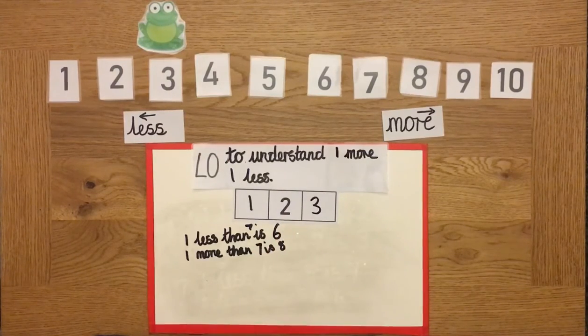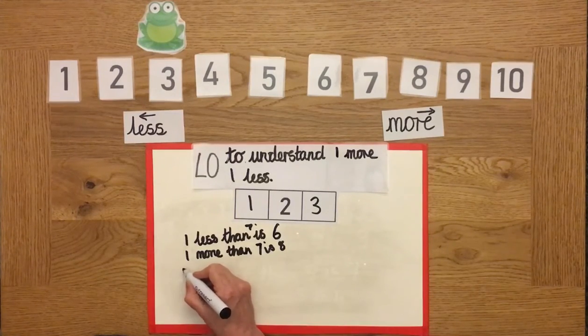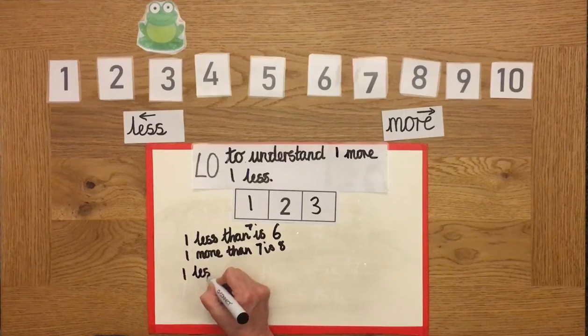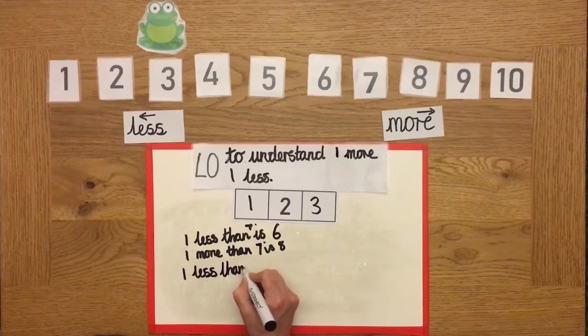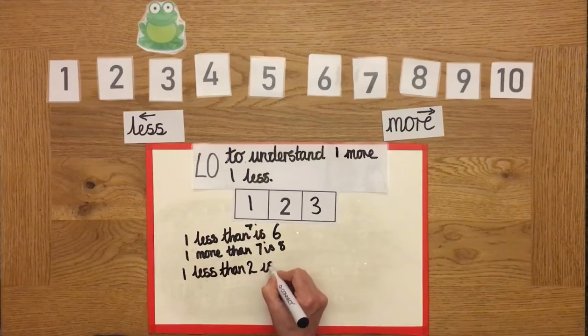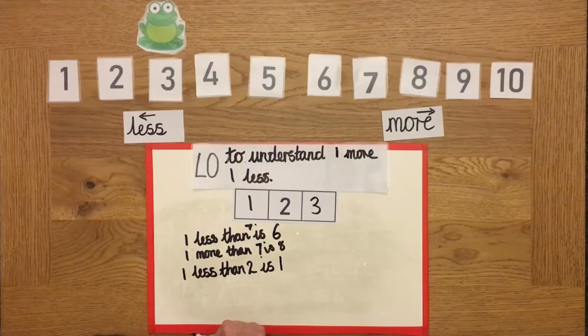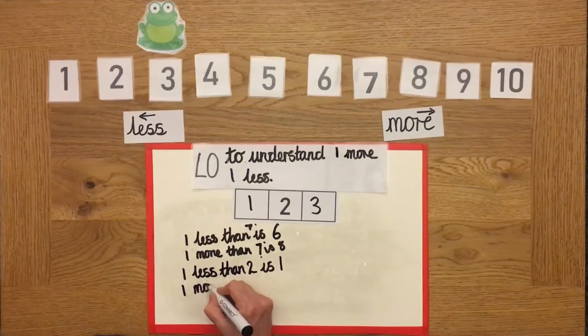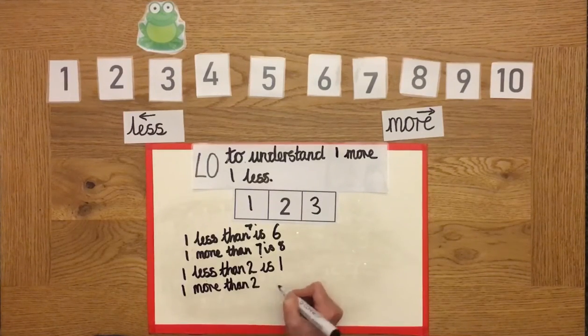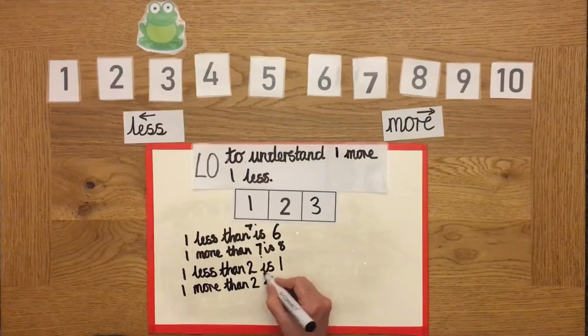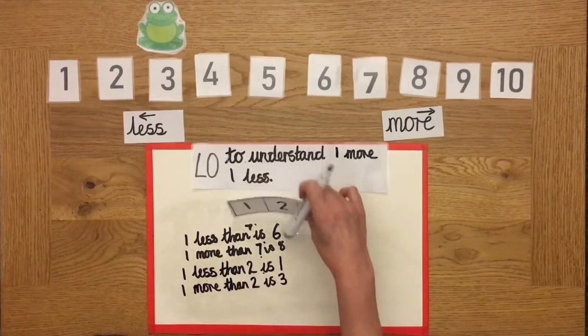So what does that tell us? That tells us that one less than two is one. And one more than two is three. Great job. We're going to do another one.